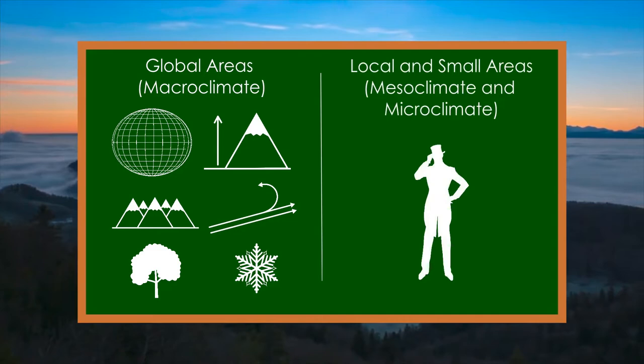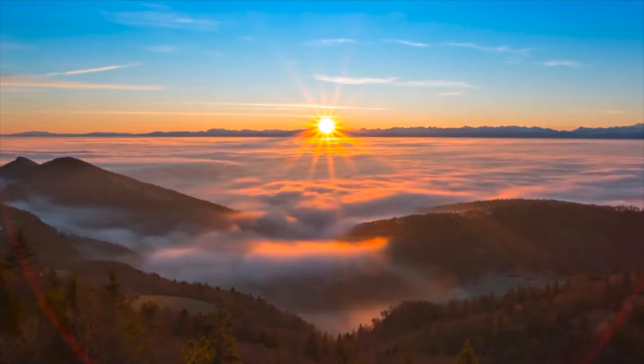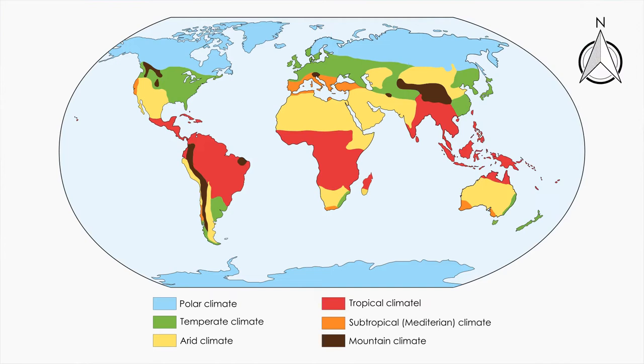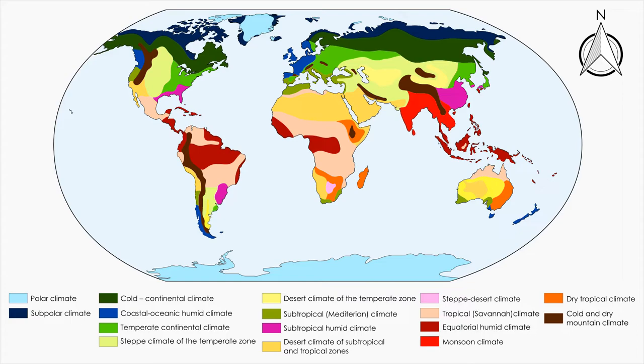Taking into account geographical factors that have an impact on macroclimate, several types of climate can be classified. Depending on the level of generalization, climate types can be classified into simpler types and into much more complex ones. According to the simpler level of generalization, there can be about six climate types. One of the most popular criteria for classification of climates is made by Russian-German scientist Vladimir Koppen.